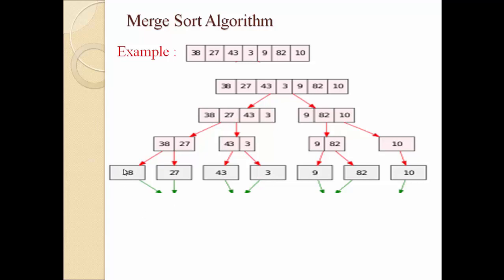Further division is not possible because all are individual elements. Now the next step is, once all the elements are separate, we go in reverse and merge the different elements. Once we get all elements individual, we start to merge them. When merging, we must retain ascending order. For example, when we merge 38 and 27, then 27 must come first, then 38.